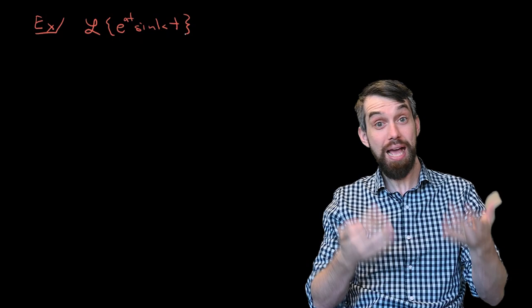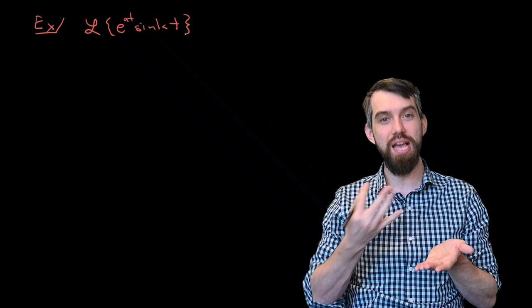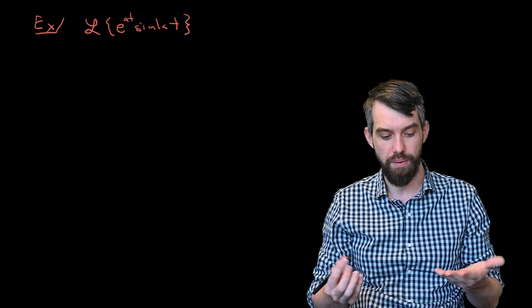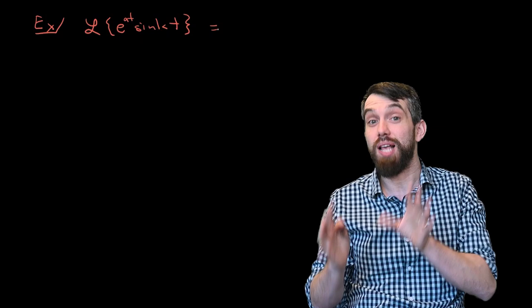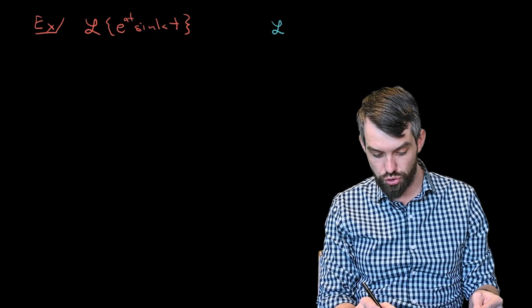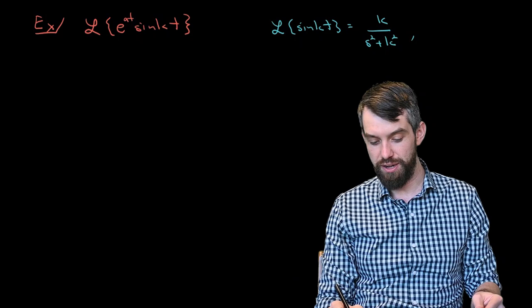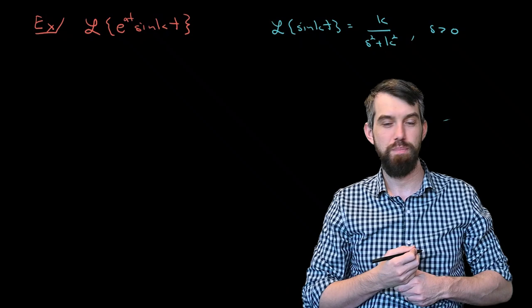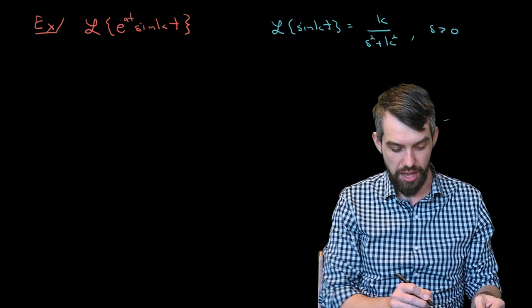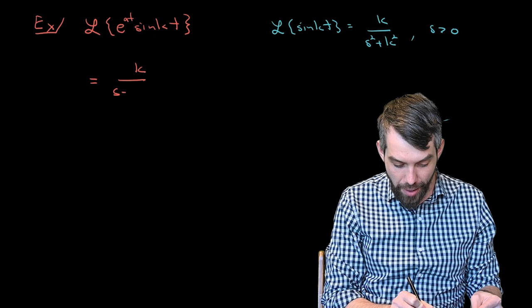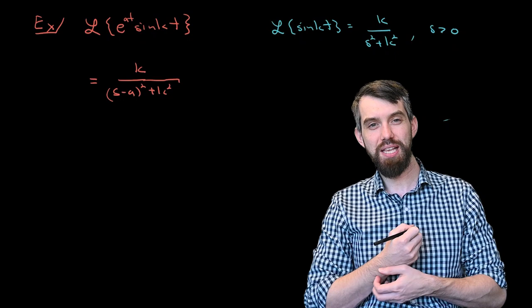Let's see another example. This time we're taking the Laplace transform — not the inverse — of e^(at) times sin(kt). It involves an exponential multiplied by something we've seen before, so we can apply the translation property again. The Laplace transform of sin(kt) by itself is k divided by (s² + k²), valid where s > 0. By the translation property, the Laplace transform of e^(at)sin(kt) is k divided by ((s-a)² + k²), valid where s - a > 0, i.e., s > a.